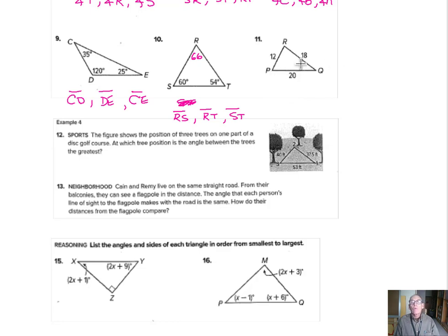Same idea for number 11. The smallest side is 12, so angle Q is opposite that. The next one up is 18, and angle P is opposite that. Then the next one up is angle R, which is opposite the 20 — that's the largest. So the order is Q, P, R.